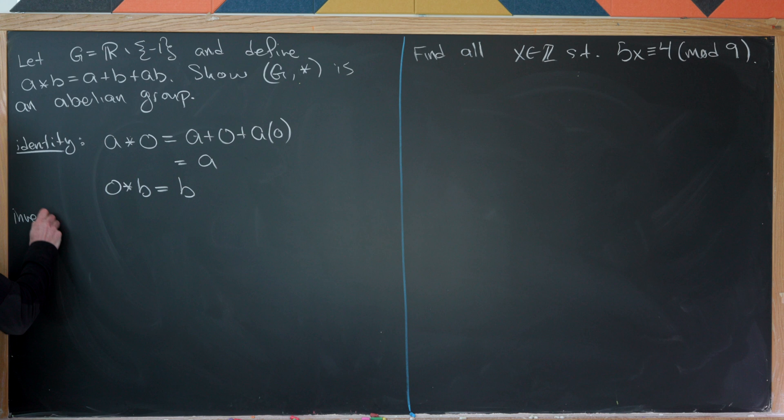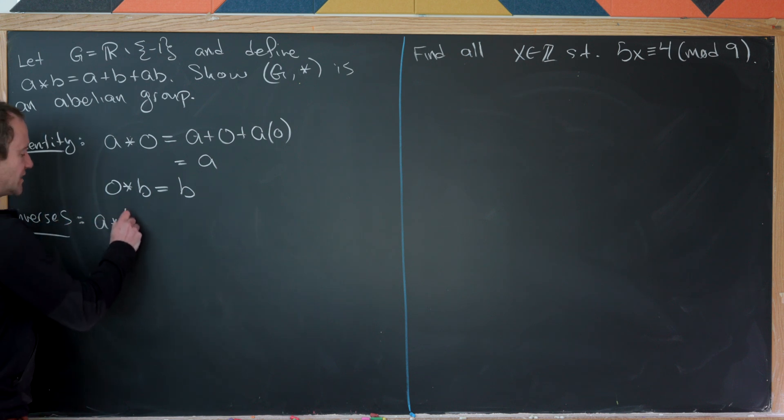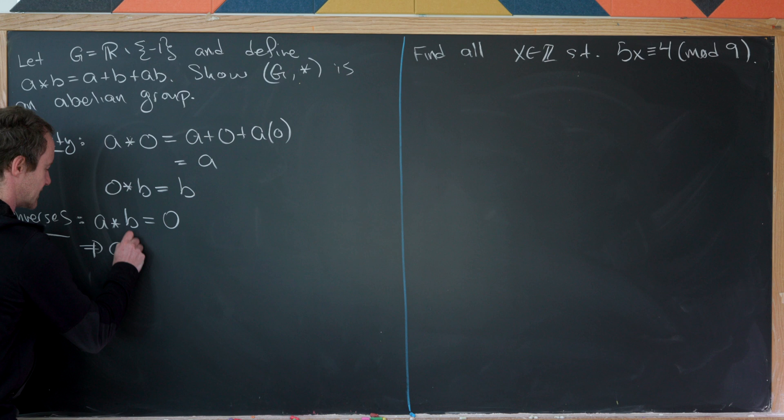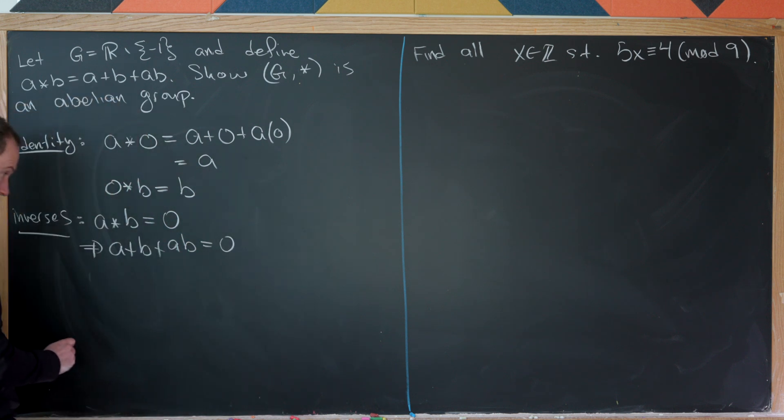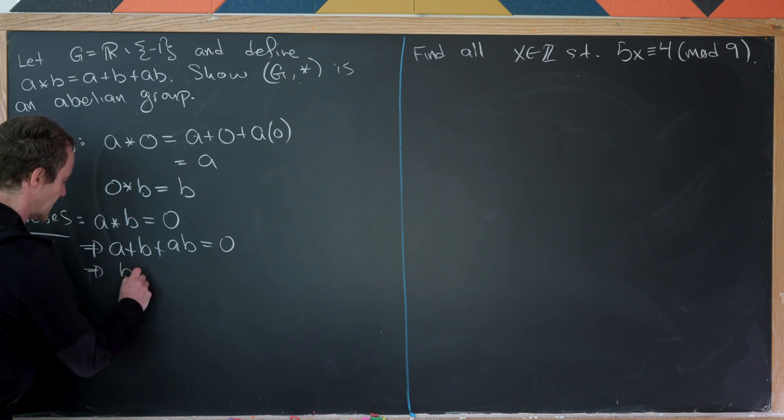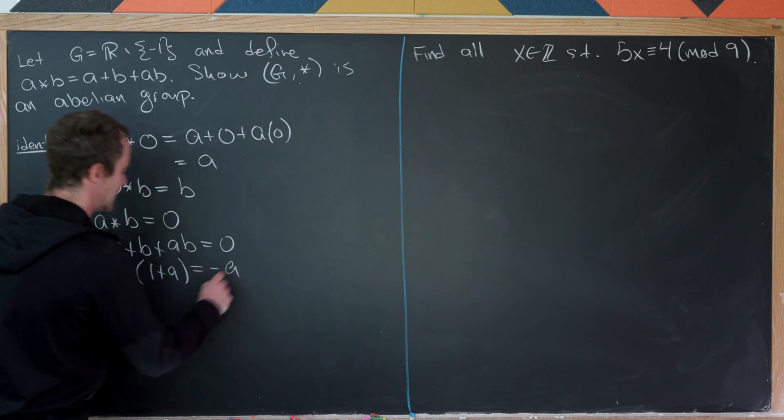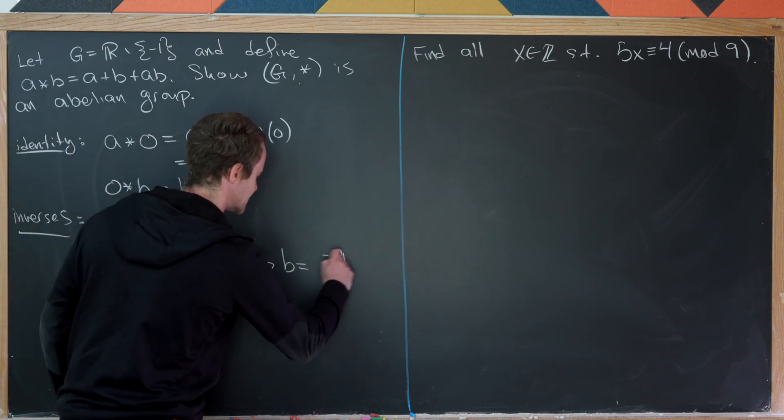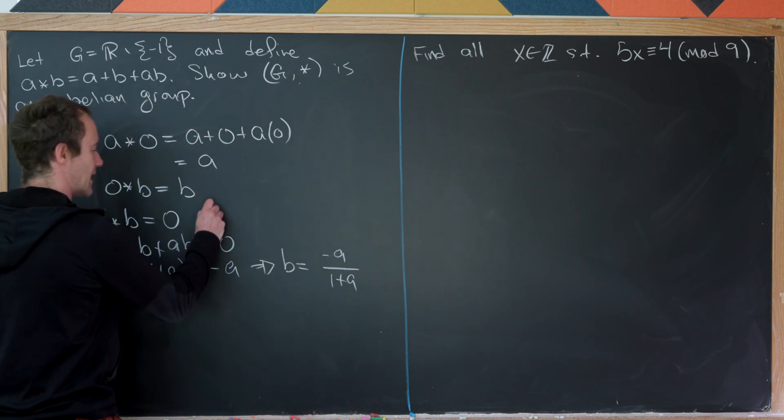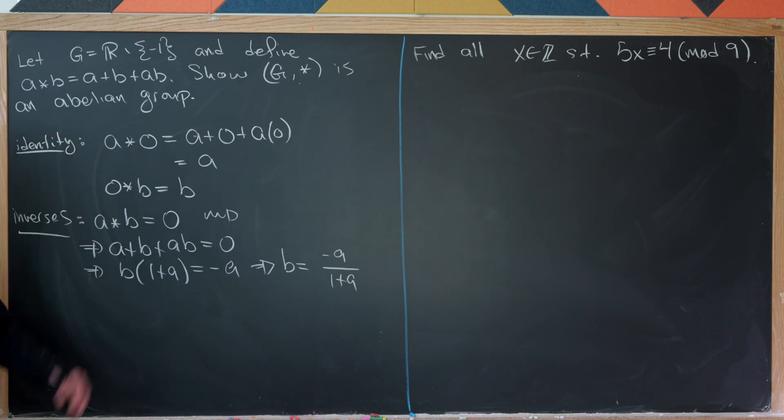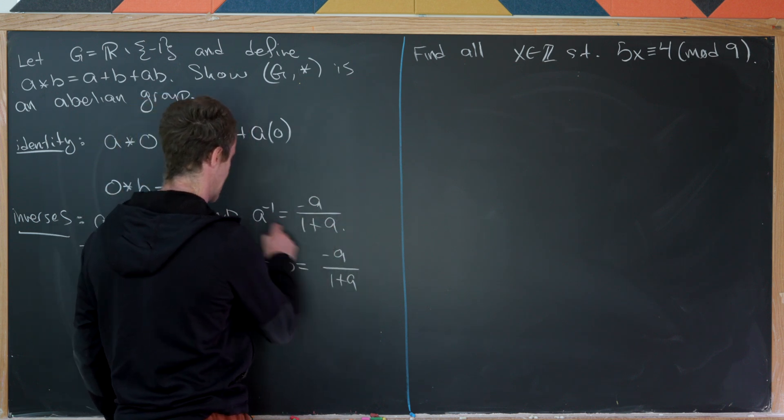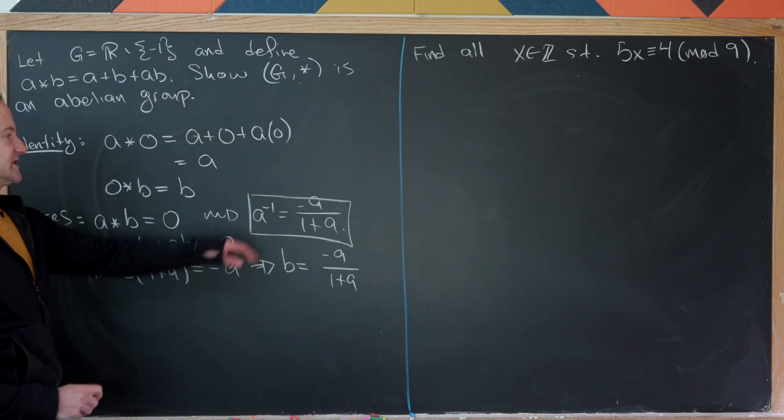Okay, so now let's prove that we have inverses. So that involves trying to solve the equation a star b equals the identity, which in this case is 0. Maybe we'll solve this for b and then we'll rename that b a inverse. So this is going to give us a plus b plus ab equals 0. But that's going to give us b times 1 plus a is equal to negative a. But then we can go immediately to b is equal to minus a over 1 plus a. So that being said, that makes this negative a over 1 plus a a good choice for a inverse. So we have a inverse is equal to negative a over 1 plus a. So there we've got inverses.